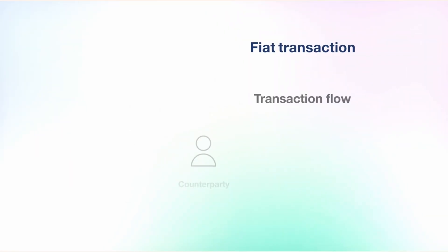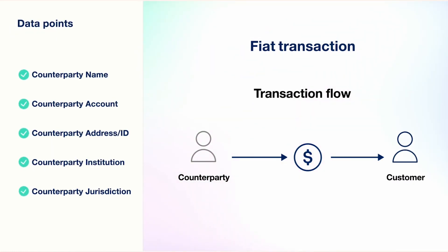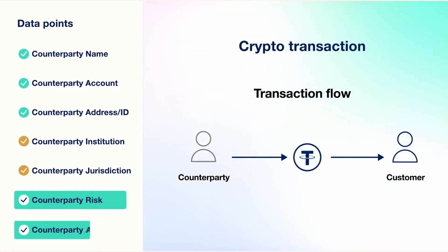If we apply that information to a transaction — in the scenario of a fiat transaction — we see USD moving from a counterparty to a customer. Now taking the same scenario of an inbound transaction and applying it to the world of crypto, the eagle-eyed among you will have noticed two new boxes appear at the bottom: counterparty risk and counterparty activity.